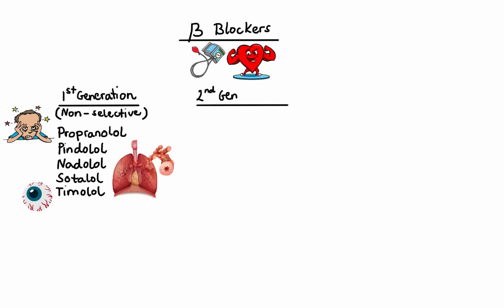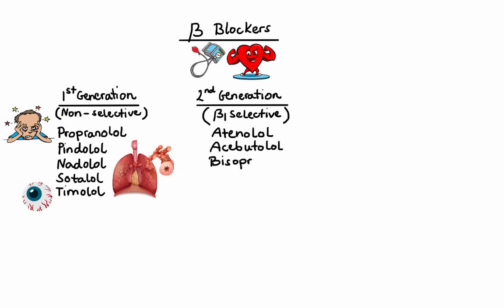Second-generation beta-blockers are selective for beta-1 receptors, which is why we also call them cardioselective beta-blockers. This cardioselectivity makes these agents more suitable in patients with chronic lung disease. However, keep in mind that at high enough doses, this beta-1 selectivity can be lost and beta-2 receptor blockade may occur. Examples include atenolol, acebutolol, bisoprolol, esmolol, and metoprolol.